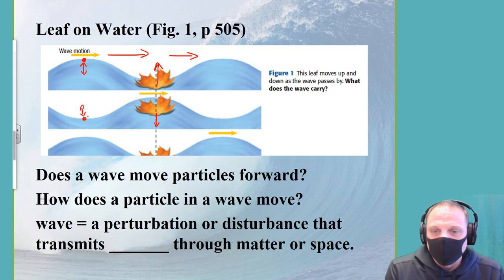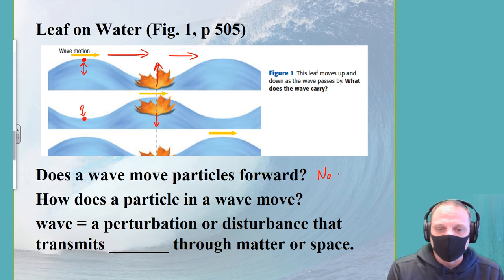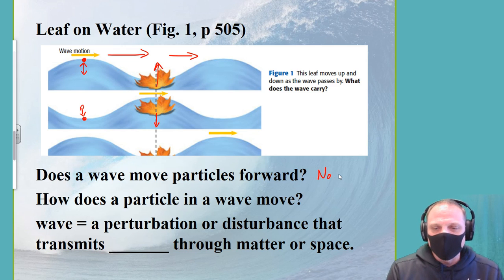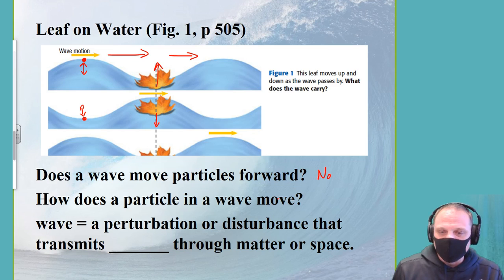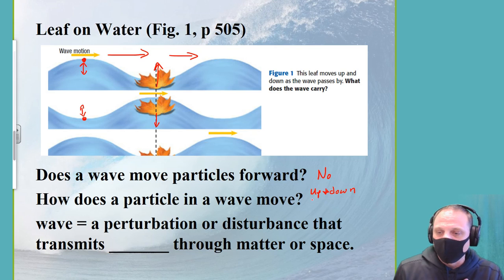Waves are actually not moving the water forward. There are things like surface waves where the particle might move a little forward but then it moves back again. Generally the particle is just moving up and down — or depending on the type of wave, back and forth. It's just oscillating, going back and forth or up and down.